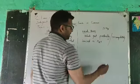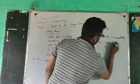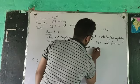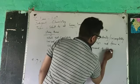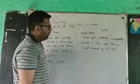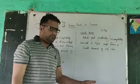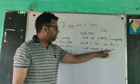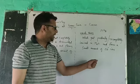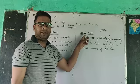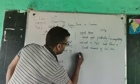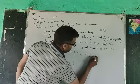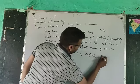Weak bases are those which get incompletely ionized in water. When they get incompletely ionized, they form only a small amount of hydroxide ions — a very lesser amount of hydroxide ions. For example, magnesium hydroxide is considered a weak base.